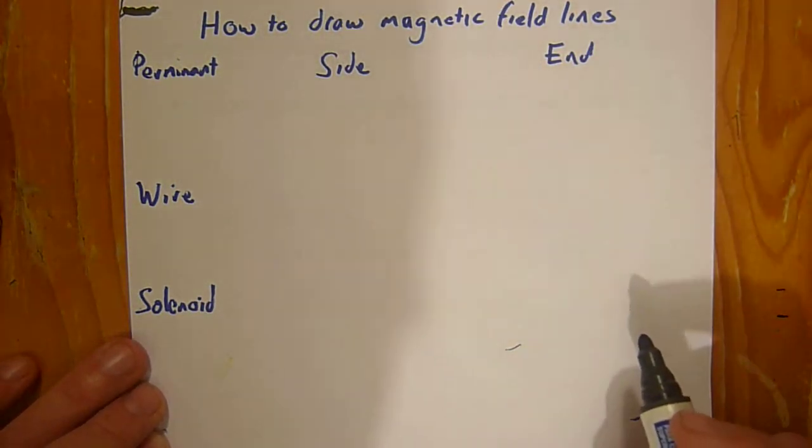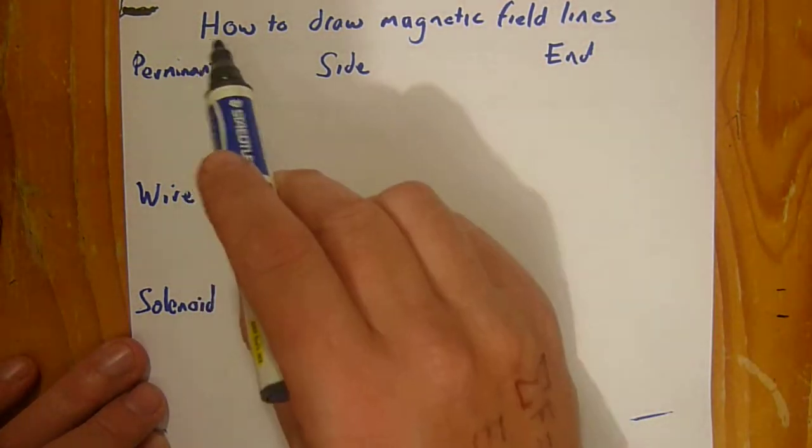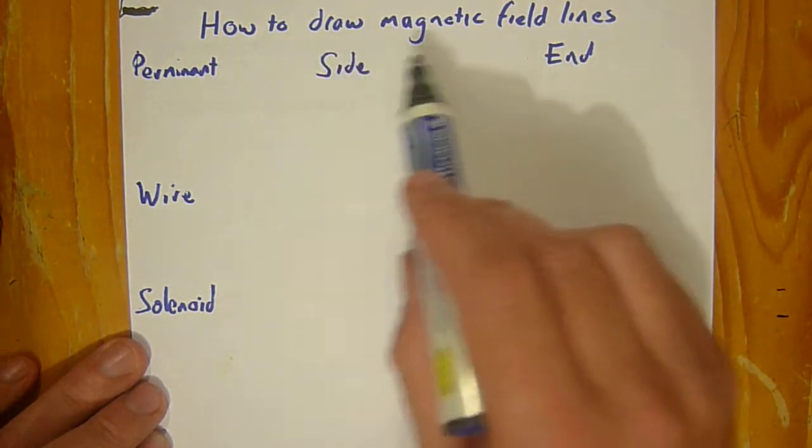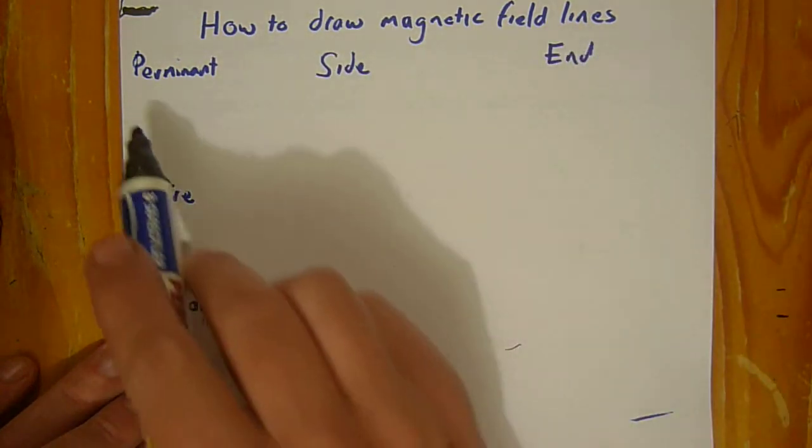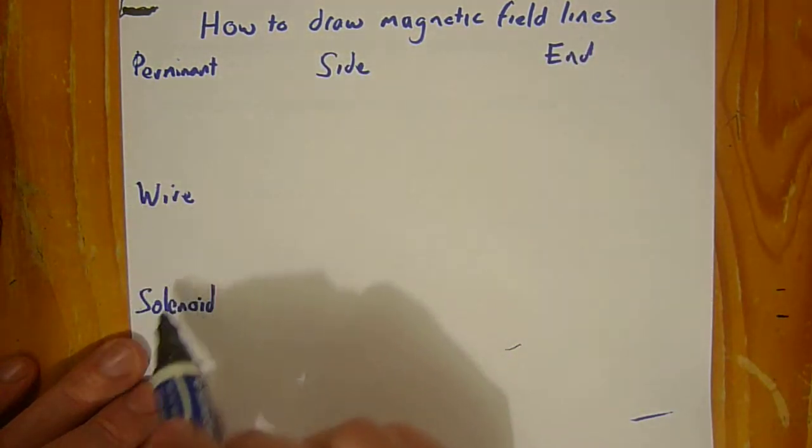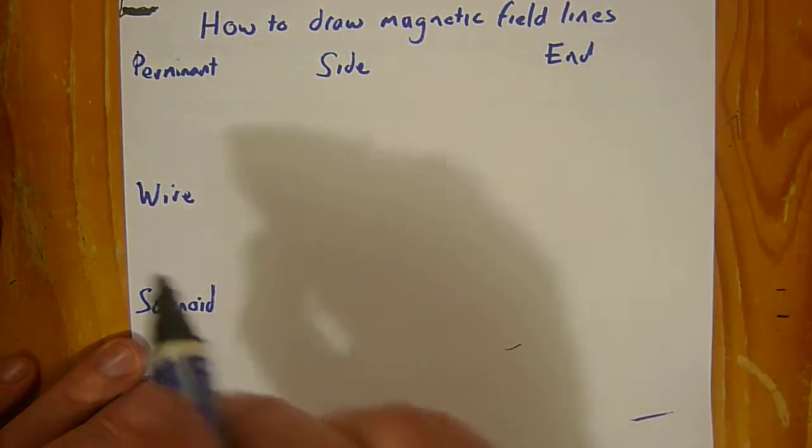Here's another video tutorial on how to draw magnetic field lines for a permanent magnet, wire, and solenoid, showing both side and end views.